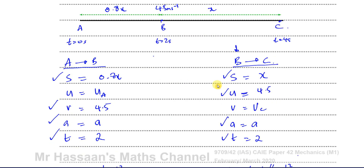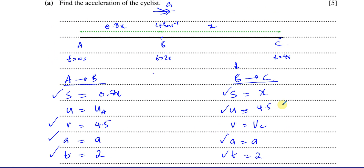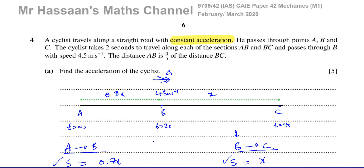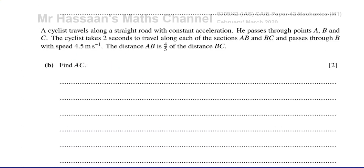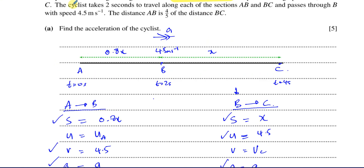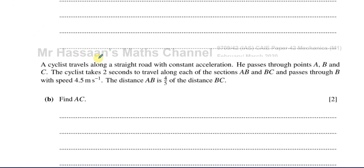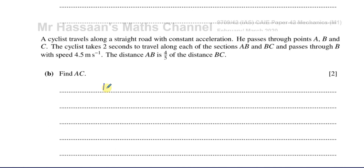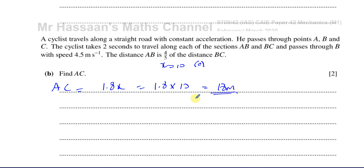The acceleration of the cyclist is 0.5 meters per second squared. For part b, it asks us to find AC, the total distance. AC is 0.8X + X = 1.8X. We already found X = 10, so AC = 1.8 × 10 = 18 meters. We already did the work for this in part a.